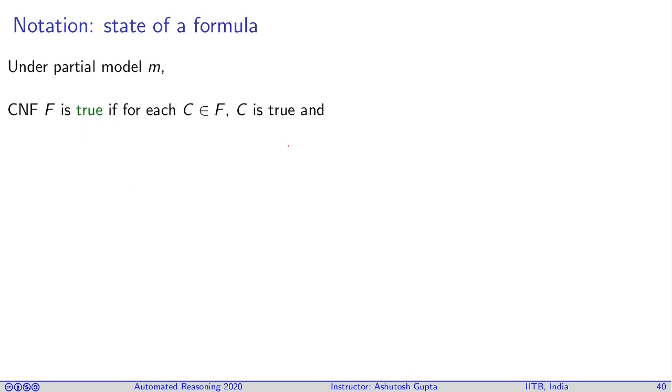Now we further extend this definition for formulas. A formula is true if all clauses in the formula are true. A formula is considered false if there is some clause such that clause is false. Otherwise we call the formula unassigned.